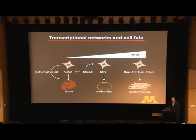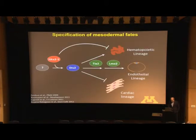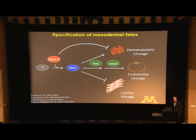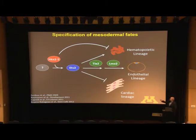We initially discovered ETV2 as a downstream target when we pursued a screen looking for NKX2.5 direct targets. Using both an overexpression as well as a gene disruption strategy, we showed that ETV2 was absolutely essential for both the endothelial and the hematopoietic lineages, and we identified several downstream target genes.